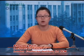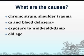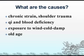This problem didn't start overnight; it is a progressive process. In Chinese medicine, shoulder pain is mainly caused by chronic strain, shoulder trauma, qi and blood deficiency, and exposure to wind-cold-damp. Another cause is the lack of nutrition of the muscles and bones and qi and blood deficiencies associated with aging. We can treat it by massage and exercise to relax the muscles and tendons and promote the circulation of qi and blood.